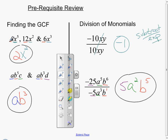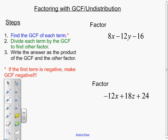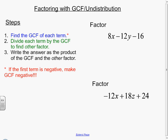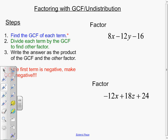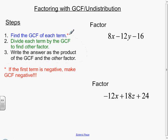Let's actually look at factoring with GCF, the full process, the full-blown process here. So we see here that it says the steps are: one, find the GCF of each term with a little asterisk; two, divide each term by the GCF to find the other factor; and then three, write the answer as the product of the GCF and the other factor. Now, what did the asterisk refer to? The asterisk referred to this right here. If the first term is negative, make the GCF negative. It's just a rule. Now, if we take a look at what we're going to factor here in these two examples, the first term here is not negative, so the GCF is not negative. The first term here is negative, so whatever the GCF is will make it negative.